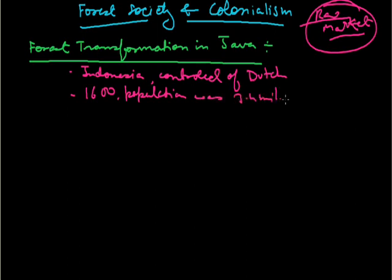If you see the population of Java in the year 1600, it was just 3.4 million. There were many villages in the fertile plains also, but the maximum populations were found in communities living in the mountains and practicing shifting cultivation.